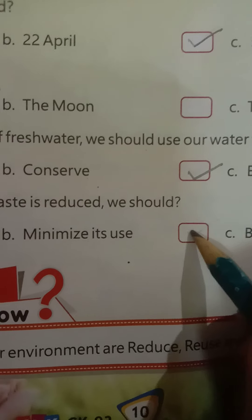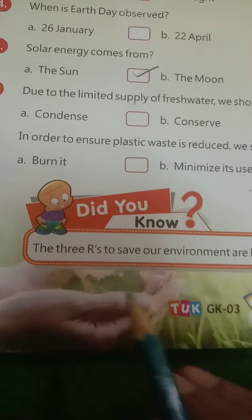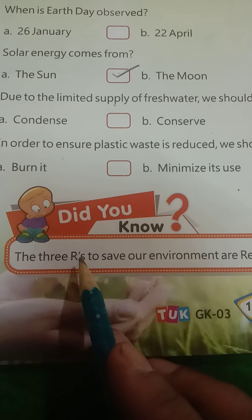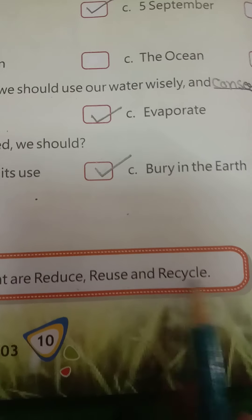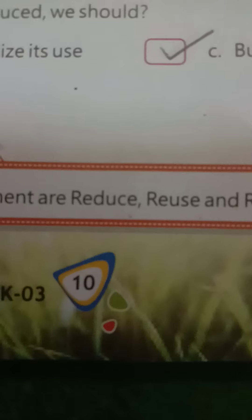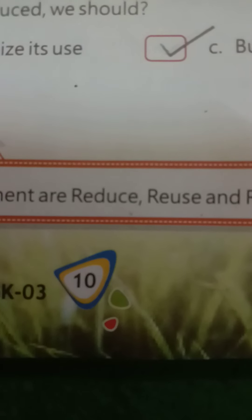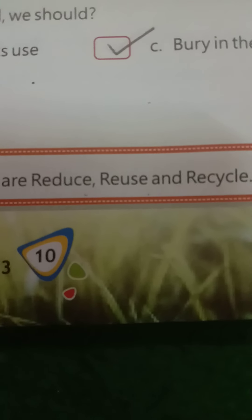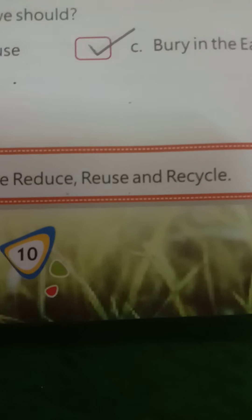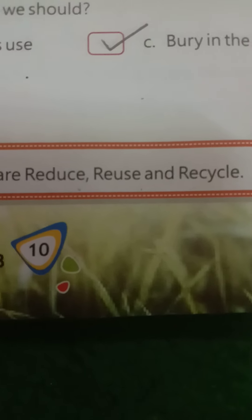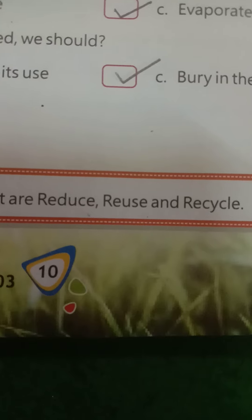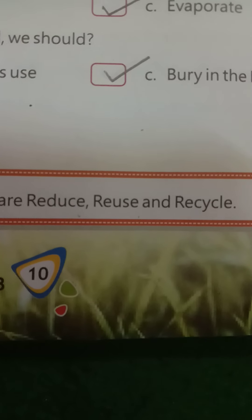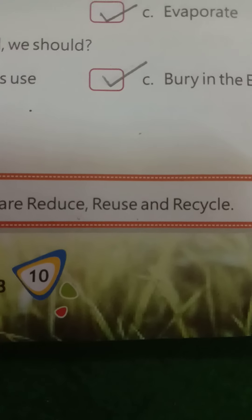Did you know the three Rs to save our environment? They are reduce, reuse, and recycle. Reduce means to minimize the amount of waste we create. Reuse refers to using items more than once. Recycle means putting a product to a new use instead of throwing it away. These three are the best way to make a positive impact on our environment.